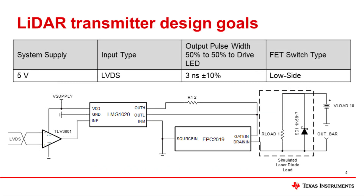As displayed on this slide, these are the design goals for the LiDAR circuit in regards to system supply, input type, output pulse width, and FET type. The key requirements are the ability to accept LVDS inputs, produce a 3 ns pulse, operate off of 5 volts, and use a low-side FET switch. Using the TLV3601, LMG-1020, and the EPC-2019 GaN FET, we were able to meet the goals for the transmitter in this design. Below the table is the completed design circuit for the LiDAR GaN FET transmitter circuit.